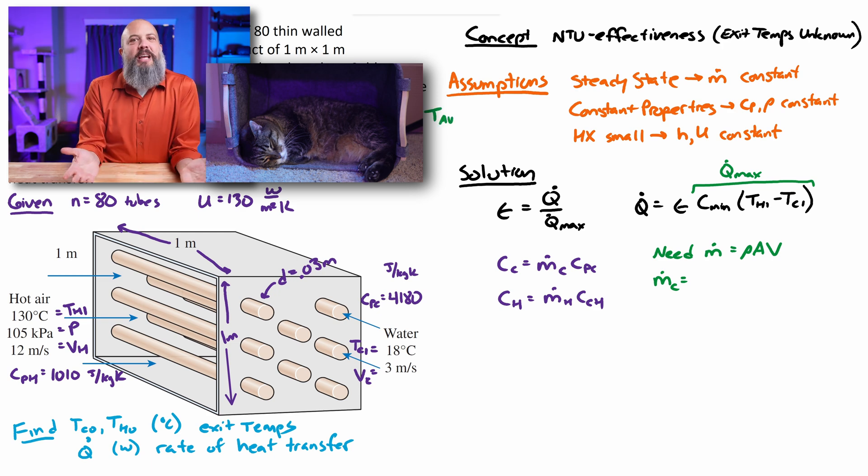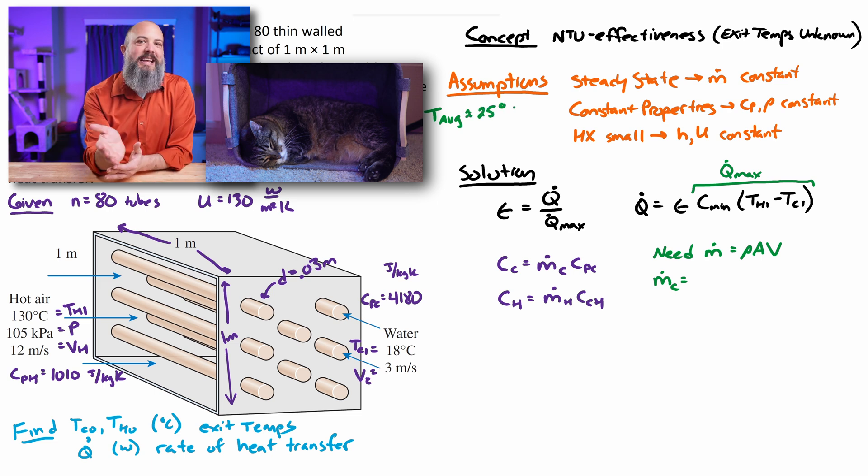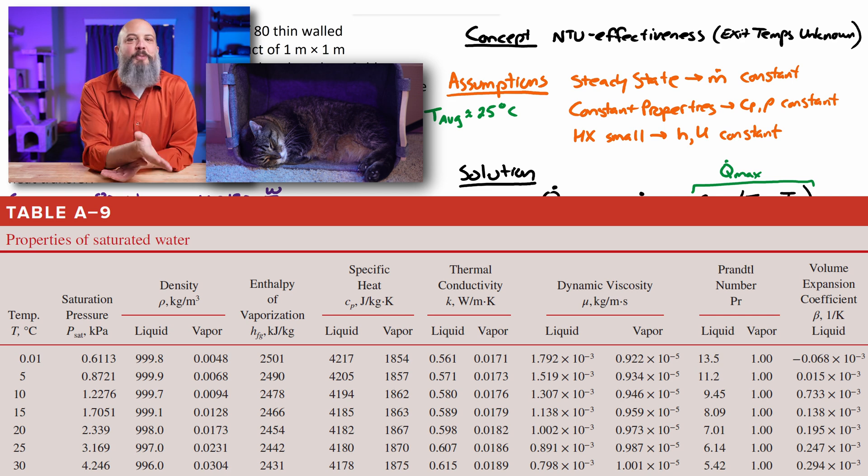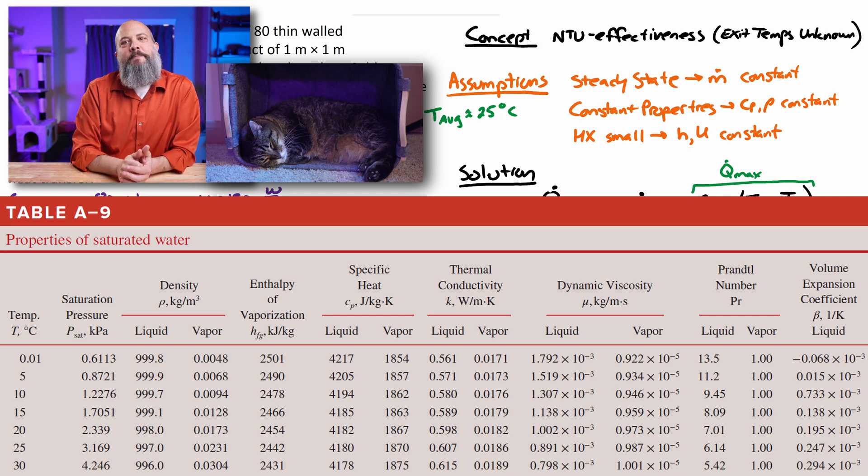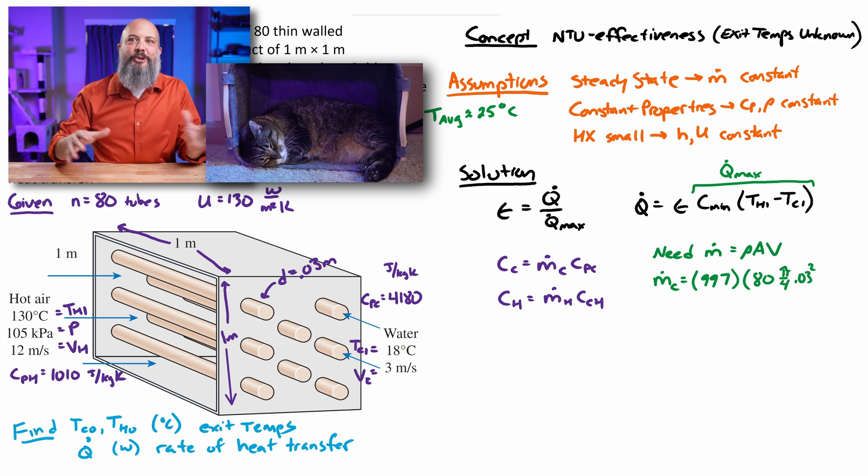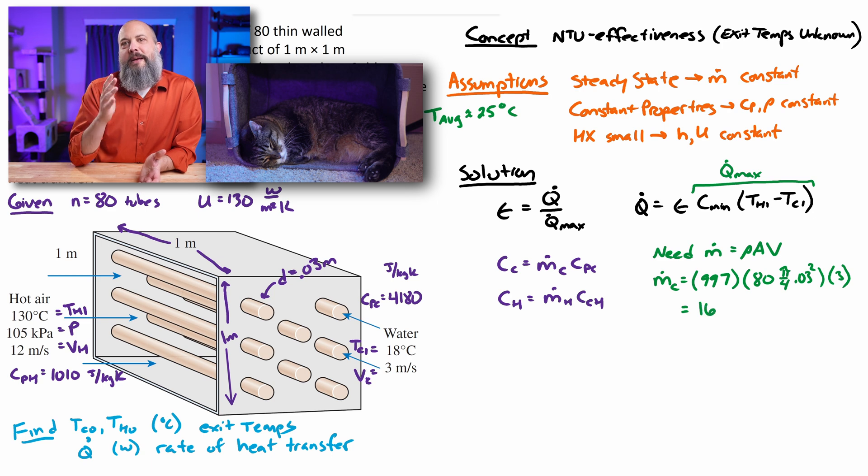And I'm just going to go ahead and make a guess here for the density because we don't actually know what the outlet temperature is going to be. I'm just kind of guessing that we'll get 997 for density, right? I'm assuming an average temperature of 25 degrees Celsius, like maybe it's coming in at 18 and leaving around 30 and averaging around 25. So I'm going to grab density at 25 Celsius of 997. But that's something we'll have to check at the end to see if that was actually a good guess. So cross sectional area, we were given a diameter for each pipe of 0.03. So pi over 4 times diameter squared. But then we also have 80, 80 tubes. So 80 times the diameter of each tube gives us cross sectional area. And the velocity we were also given 3 meters per second. This gives us a mass flow rate for the cold flow of 169.1 kilograms per second.